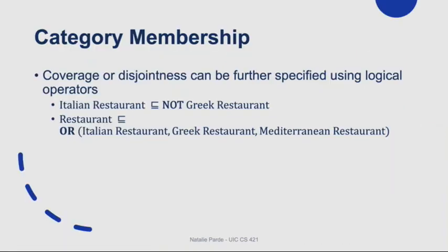To further specify coverage or disjointness in this hierarchical structure, we can include logical operators in our subsumption relations. For example, if we want to indicate that Italian restaurants can't also be Greek restaurants, we could use the logical NOT operation. If we want to indicate that the category restaurant is covered by the smaller categories Italian restaurant, Greek restaurant, and Mediterranean restaurant, we could use the logical OR operation.